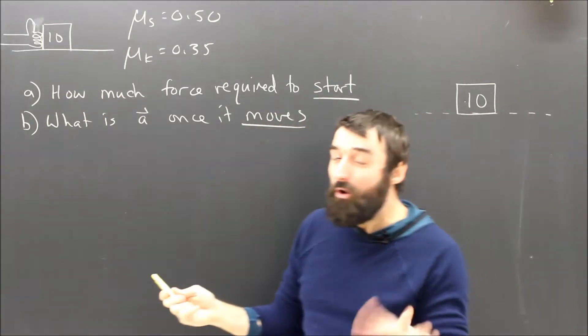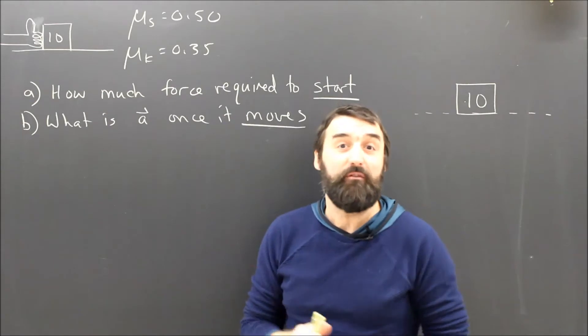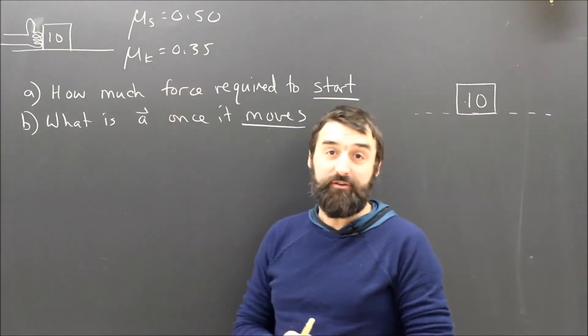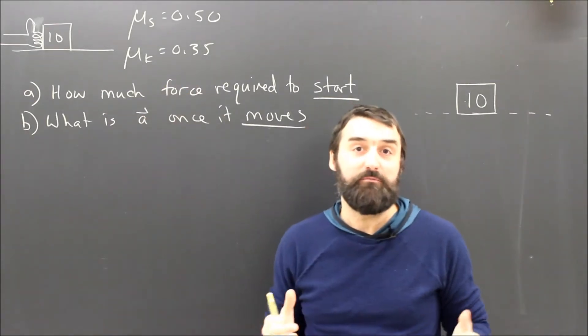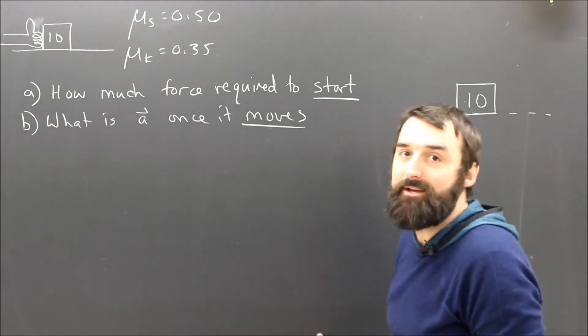I happen to know already that the static coefficient of friction is 0.5 and that the kinetic coefficient of friction is 0.35. So μs is 0.5, μk is 0.35.